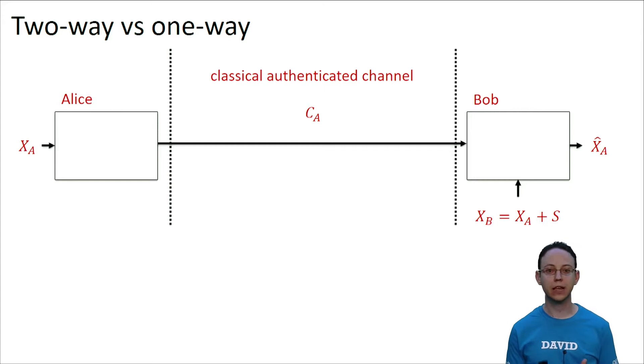However, much more simpler and in many circumstances good enough, the whole reconciliation might consist of a single message from Alice to Bob. We call these reconciliation protocols one way.